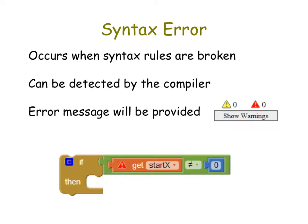Remember that all code is just ones and zeros, but we can't understand ones and zeros, and we have a hard time writing code in strictly ones and zeros. So instead, we have different programming languages. The programming language we are using is App Inventor. App Inventor has certain syntax rules that describe how you communicate with the computer.